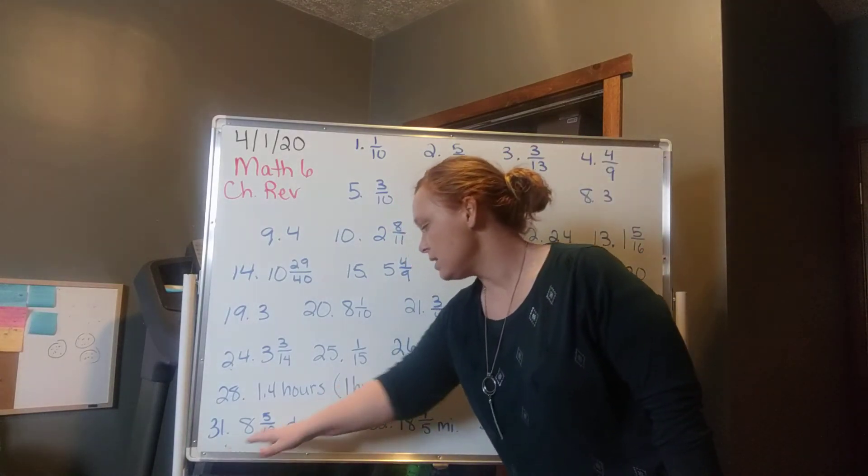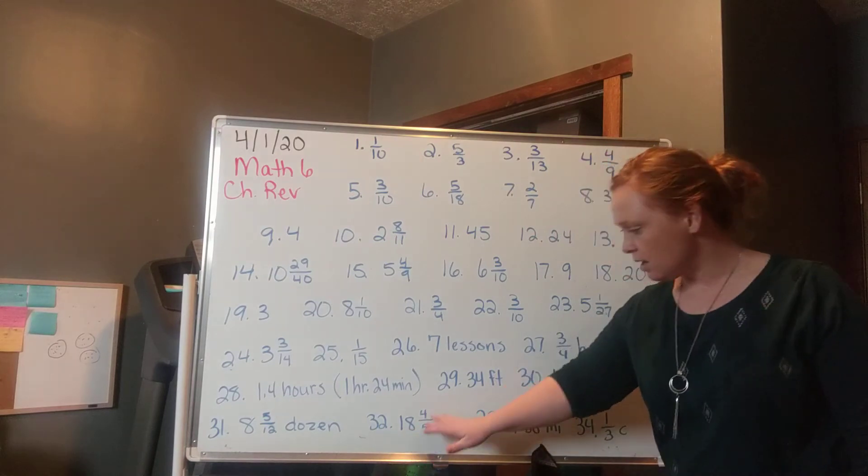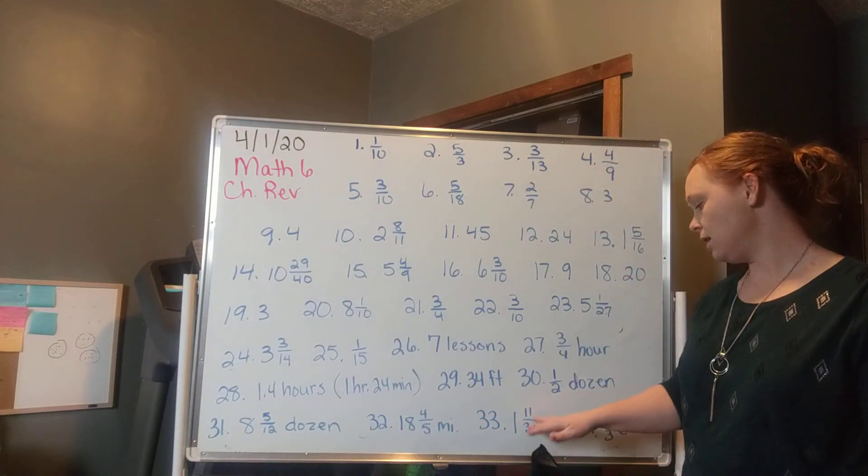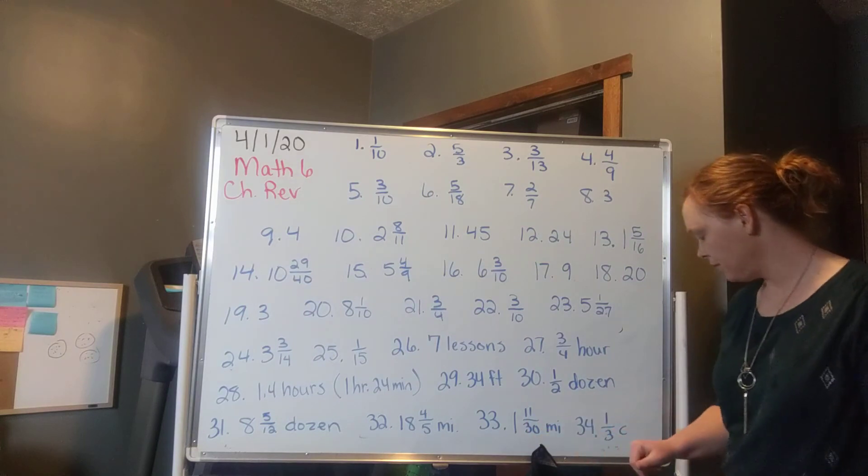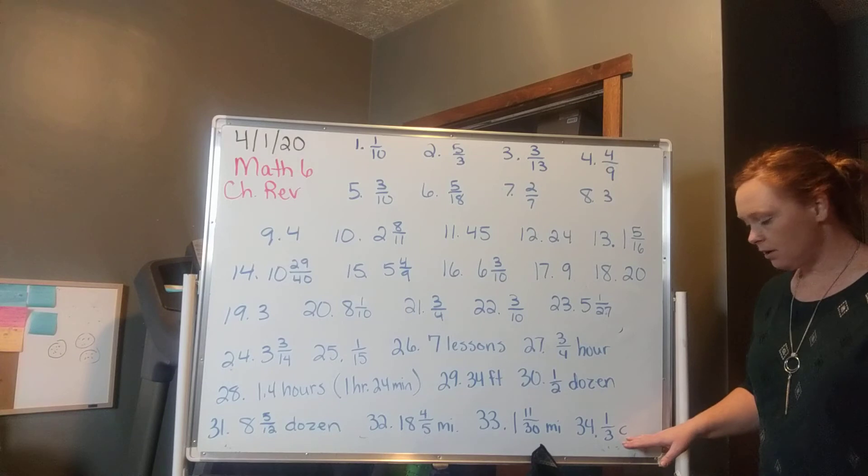Number 31 is 8 and 5 twelfths dozen. Number 32 is 8 and 4 fifths mile. Number 33 is 1 and 11 thirtieths mile. And then 34 is 1 third of a cup.